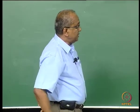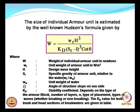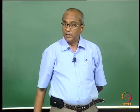The weight of an individual armour unit in Newtons is given by the Hudson's formula expression, where W_r is the unit weight of the armour unit, H is the design wave height, S_r is the specific gravity of the armour unit relative to sea water — that is W_r divided by W_w — and W_w is the unit weight of sea water. Then you have the angle of the structure slope.